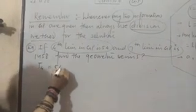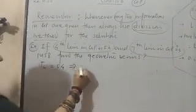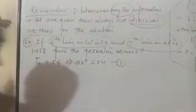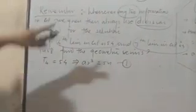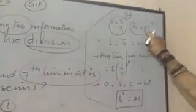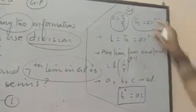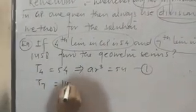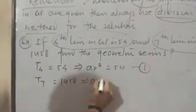T4, what is it? 54. T4, you put the values: AR^3 equals 54, equation one. Similarly, T7, you put: AR^6 equals 1458, second equation. Now from first and second, divide: AR^6 upon AR^3 equals 1458 upon 54.